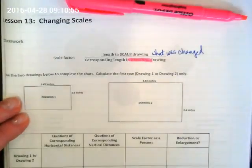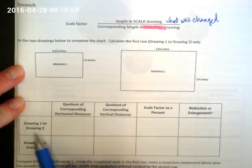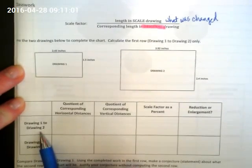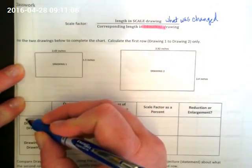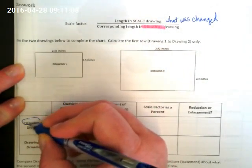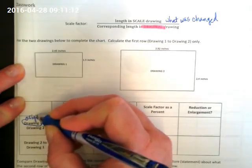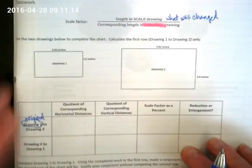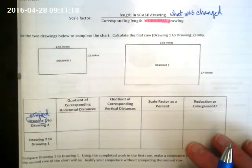So we're going to fill in this table down here together, and we're starting with drawing one to drawing two. That means that we're looking at drawing one as the original because we're going from it to drawing two.